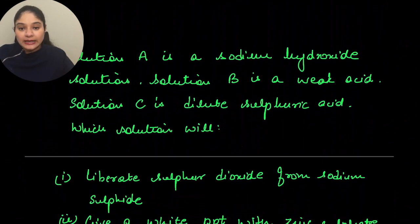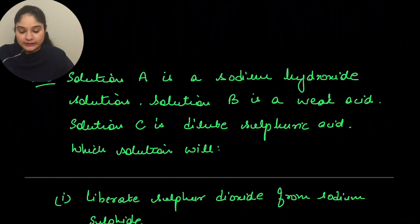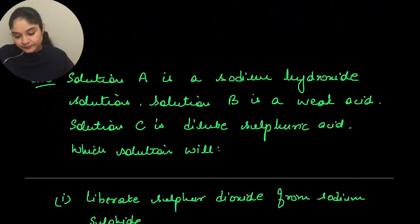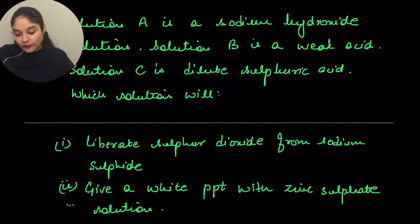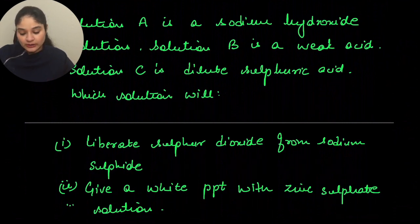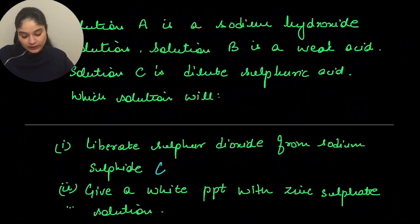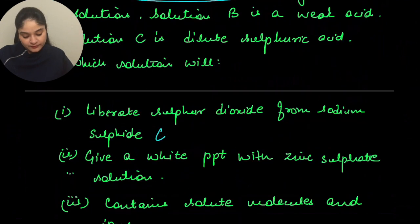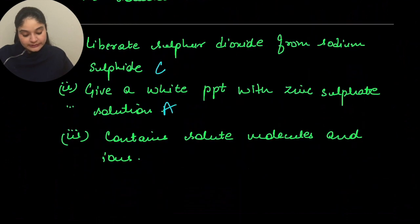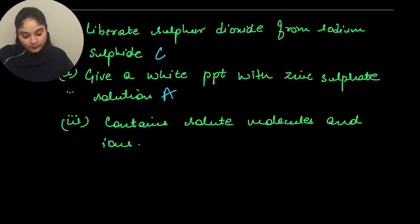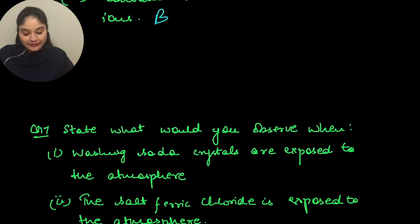Question 16: Solution A is sodium hydroxide, Solution B is a weak acid, Solution C is dilute sulfuric acid. Which will liberate sulfur dioxide from sodium sulfide? Solution C. Which gives a white precipitate with zinc sulfate? Solution A. Which contains solute molecules and ions? Solution B — the weak acid.